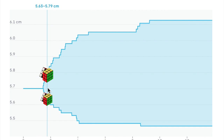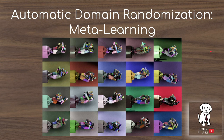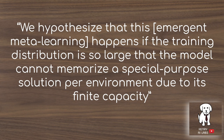A visualization from OpenAI's blog post shows how you might simulate different sizes of the Rubik's cube — in some physics simulations the robot hand has access to a very large cube compared to a very small one. This kind of domain randomization gives rise to emergent meta-learning. From the paper: the hypothesis is that this emergent meta-learning happens if the training distribution is so large that the model cannot memorize a special-purpose solution per environment due to its finite capacity — so rather than memorizing all different randomized environments, the network learns to adapt its sense of dynamics given new environments.